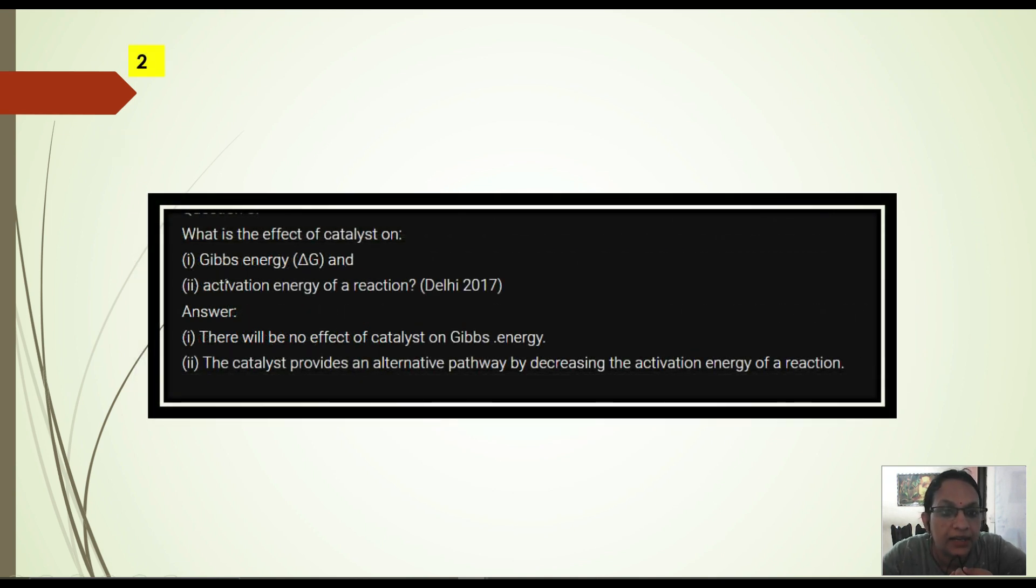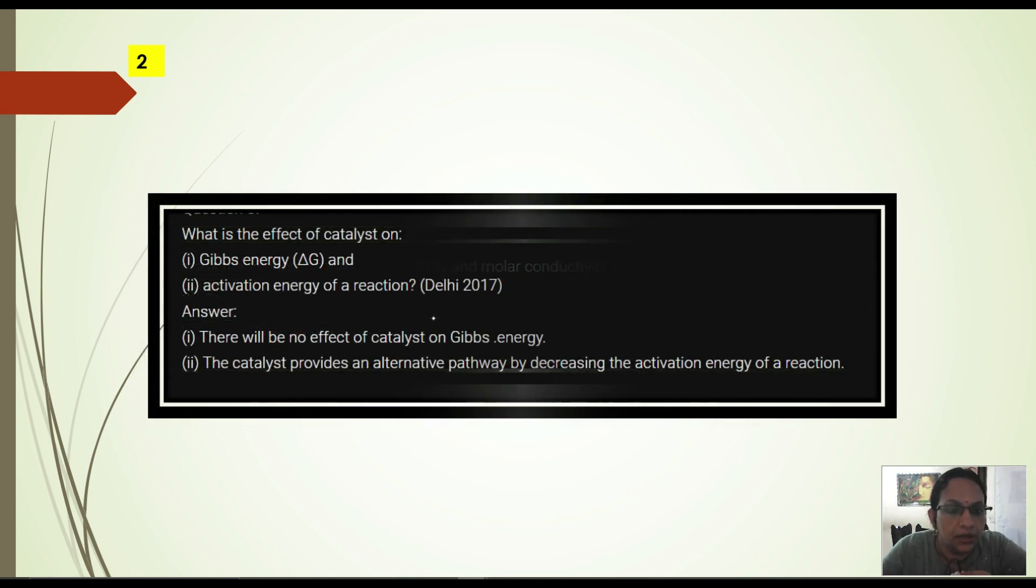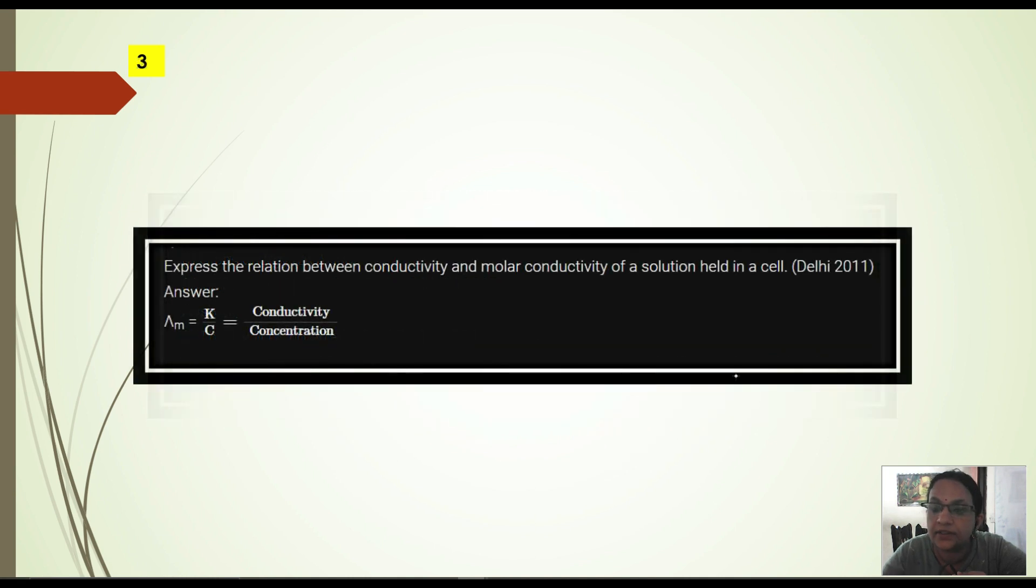Next question: What is the effect of catalyst on Gibbs energy? Activation energy. So, there is no effect of catalyst on Gibbs energy. Or activation energy - the catalyst provides an alternate pathway by decreasing the activation energy. Catalyst lowers down the activation energy.